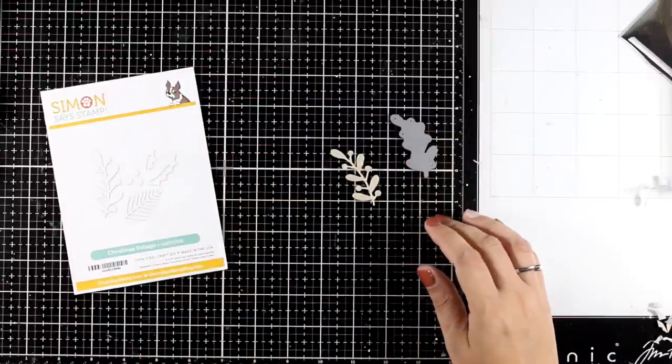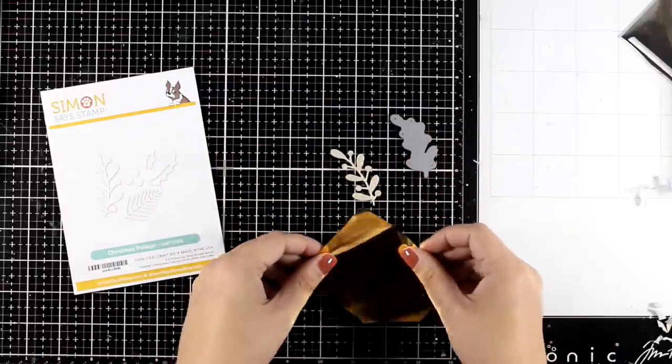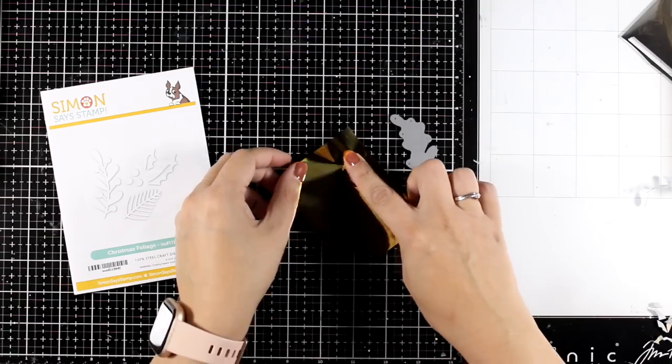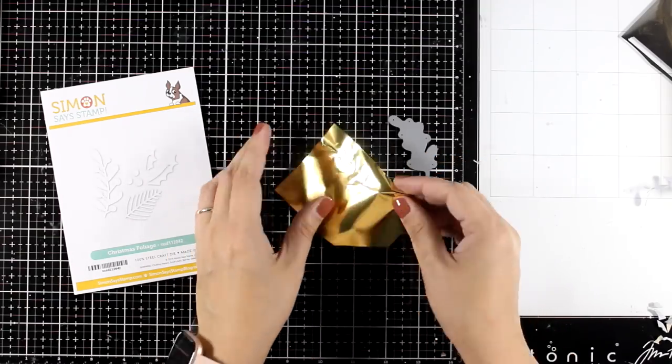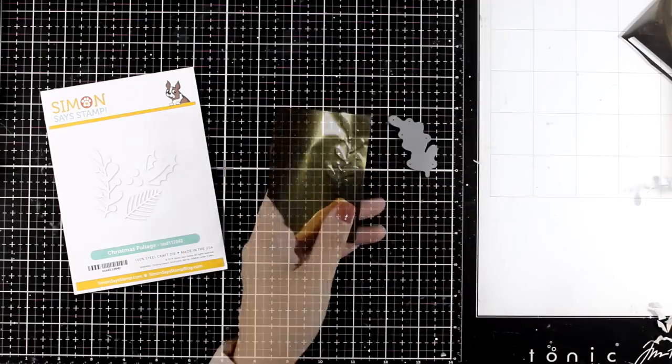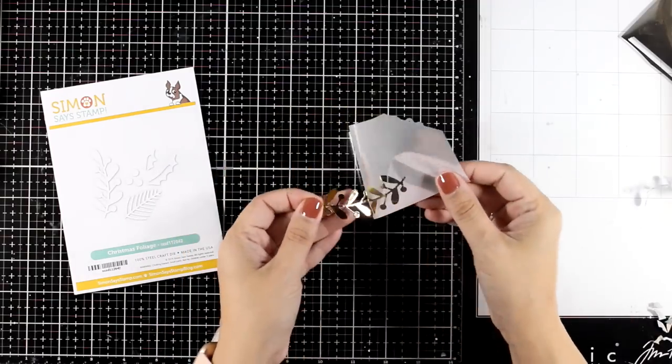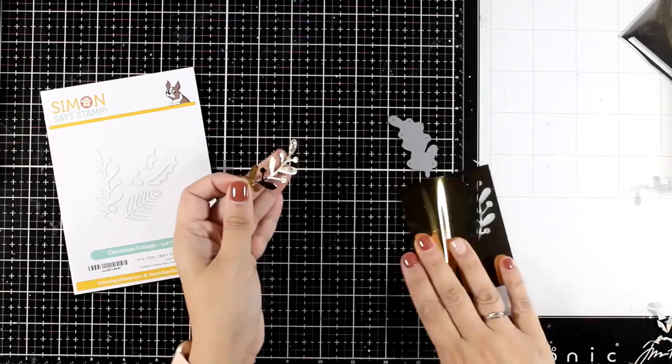Just peel it off, and then place on top any of the colored foils that you have included in the kit. And I'm going with a golden scrap that I have here. I'm just going to press it down, run it through my die cutting machine to apply pressure, and this is a great way to make the most out of your dies.